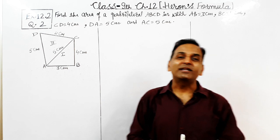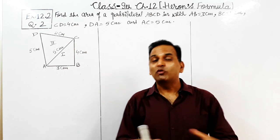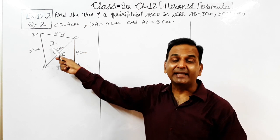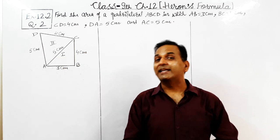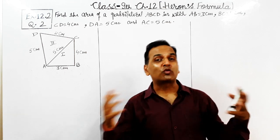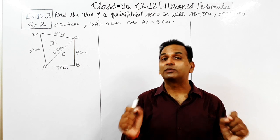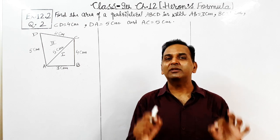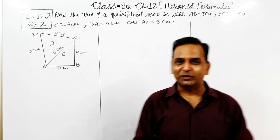For getting the area of quadrilateral ABCD, we have to find out the areas of the two triangles ABC and triangle ACD one by one. After getting the areas of these two triangles, the area of the whole quadrilateral ABCD will be equal to the sum of the areas of these two triangles. So first of all, let us mention the dimensions of quadrilateral ABCD.